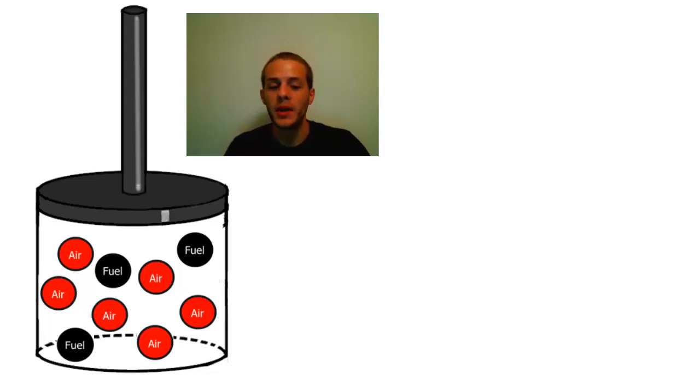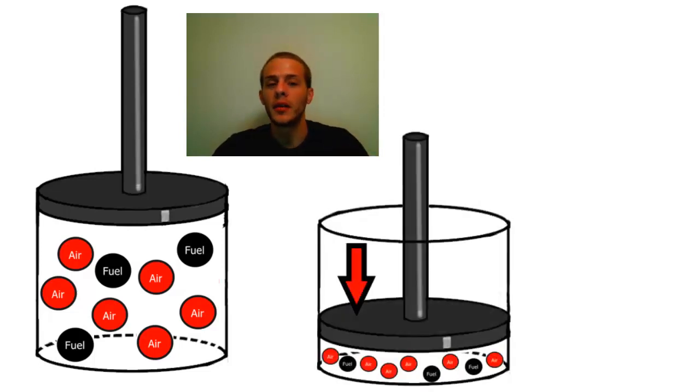And once we have that mixture what's going to happen is that piston is going to travel on a downward stroke. And it's going to compress that fuel air mixture. So now we got this compressed fuel air mixture occupying a very small volume. And it has a whole lot of potential energy.